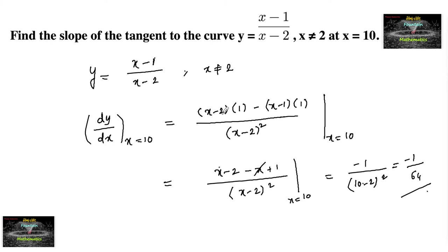So you can conclude that the slope of the tangent to the given curve at x equals 10 is minus 1 by 64. Thank you.